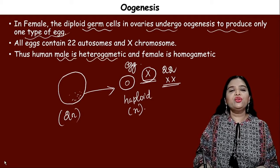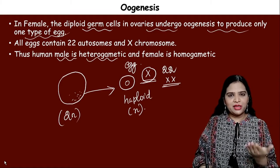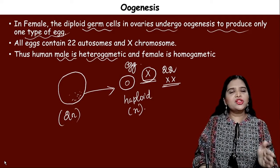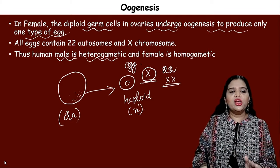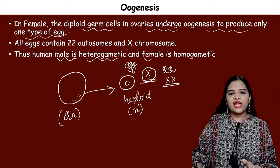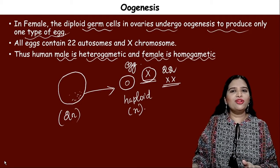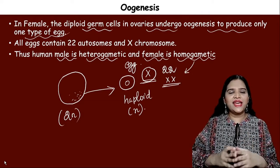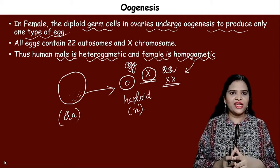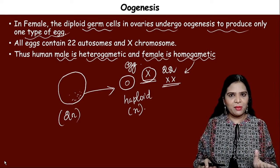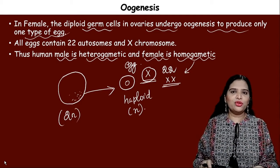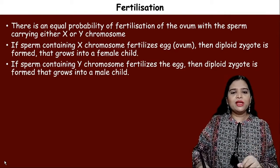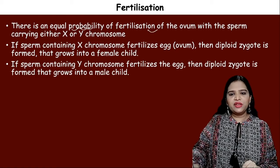The human male is called heterogamatic because he produces sperms with two different chromosomes — half carry X and half carry Y. The human female is homogamatic because all egg cells produced contain the same X chromosome.